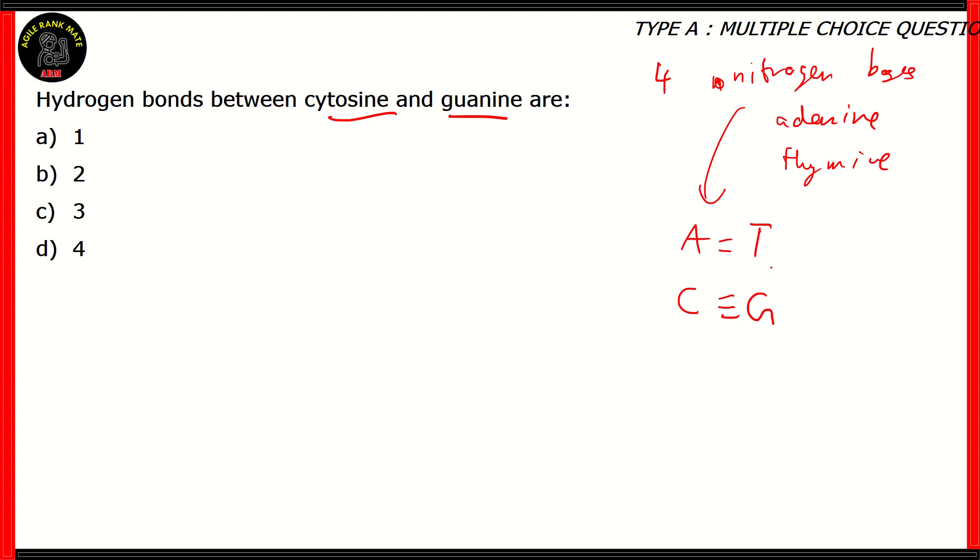For RNA, it's uracil instead of thymine. That's the only difference. For DNA, adenine always bonds with thymine and cytosine always bonds with guanine. Adenine and thymine only need two hydrogen bonds, while cytosine and guanine would require three hydrogen bonds. So the question here is the amount of hydrogen bonds between cytosine and guanine, which means that option C turns out to be the right answer. The other options are incorrect. One and four would not exist. Two is the case for adenine and thymine.